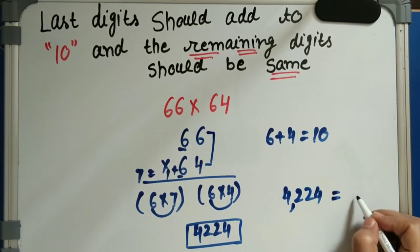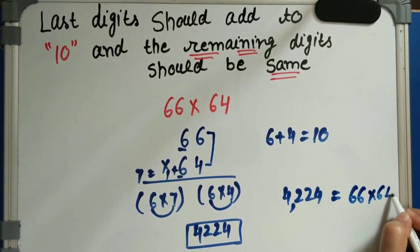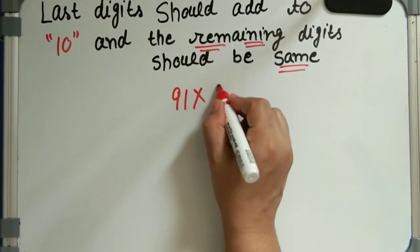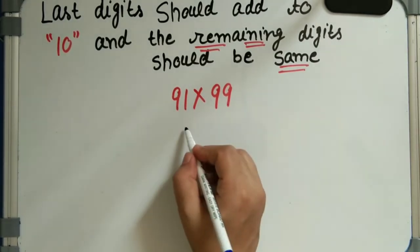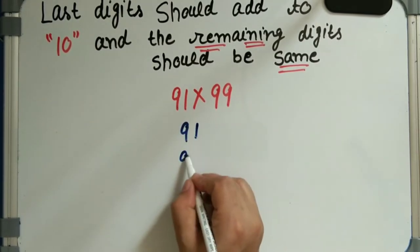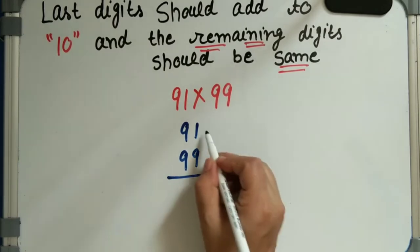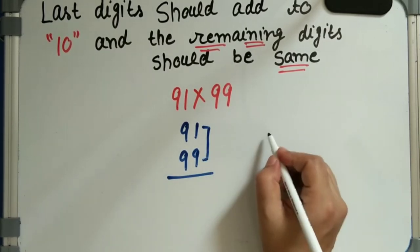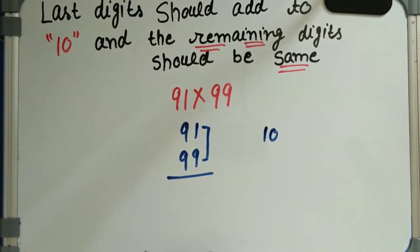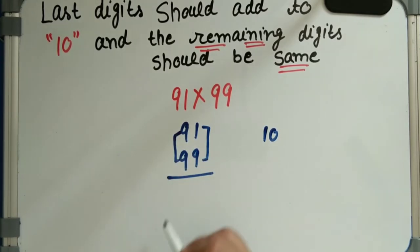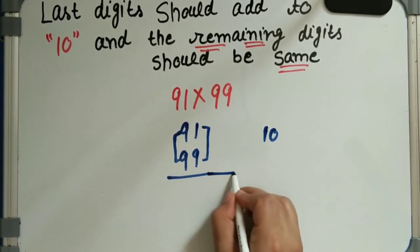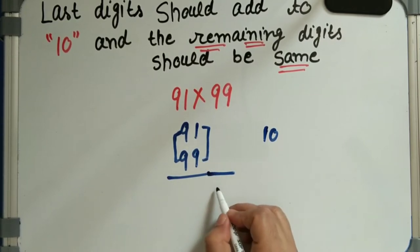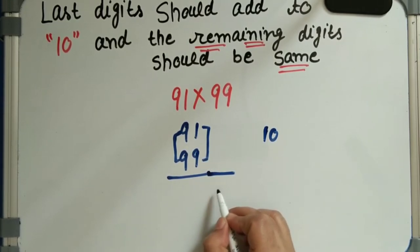That is the multiplication of 66 into 64. Next example: 91 into 99. Here the last digits are 1 and 9, and their sum equals 10. And the remaining digits — 9 and 9 — are the same. So we do 1 into 9, which equals 9.